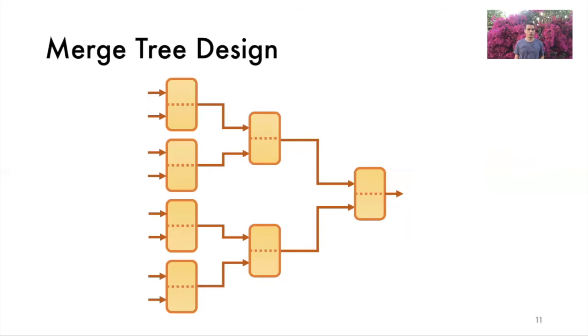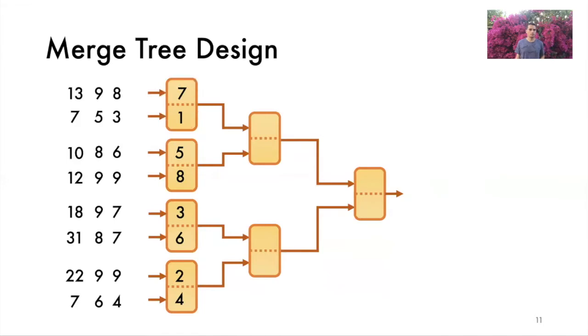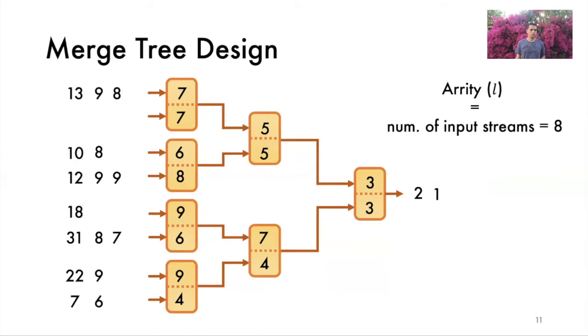A merge tree is a binary tree with mergers at each of its vertices. We feed the sorted arrays into the leaf mergers. The leaf nodes read the respective inputs, compare the values, and output the smaller one. We feed new values from tops of the respective input streams, and this process repeats. The merge tree allows us to merge more than two arrays concurrently. We define arity as the number of arrays the merge tree can concurrently merge. In this example, arity is equal to eight. We denote arity with the lowercase l.